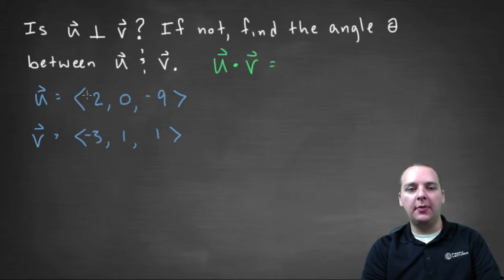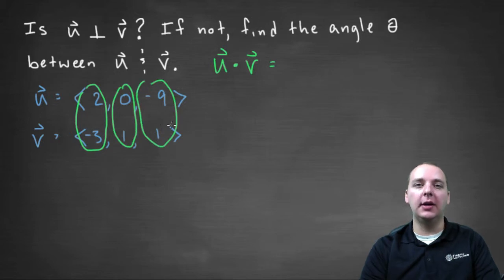then we will have the ith component multiplied together, the jth components multiplied together, and the kth components multiplied together, and then added all together.